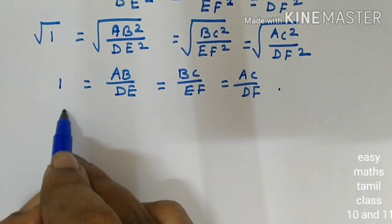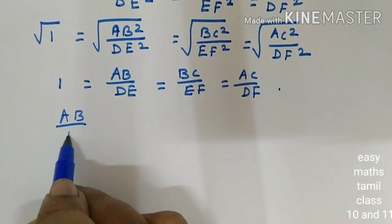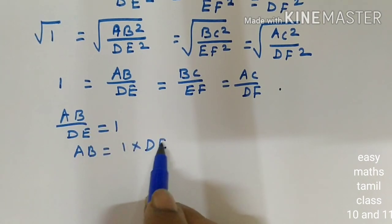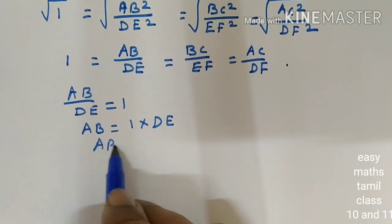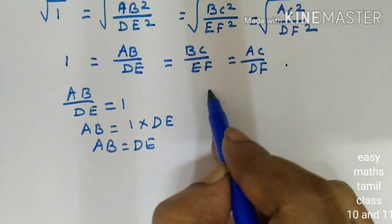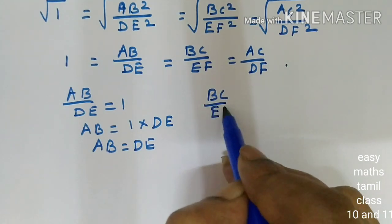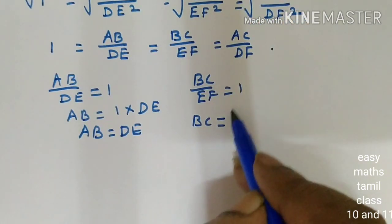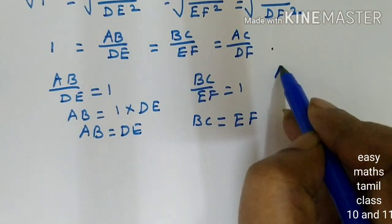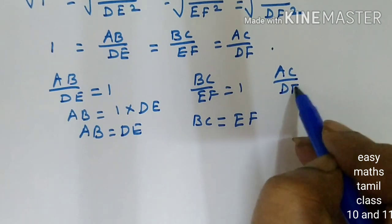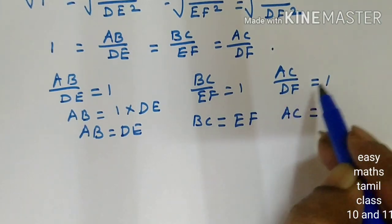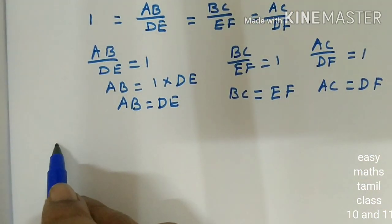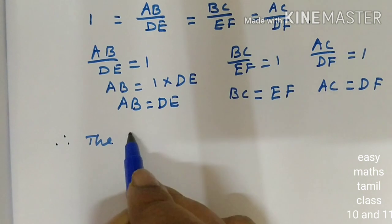So, AB over DE equals 1, meaning AB equals DE. In the same way, BC over EF equals 1, so BC equals EF. And AC over DF equals 1, so AC equals DF. Now, all 3 sides are equal to the corresponding sides.